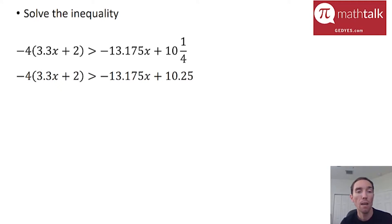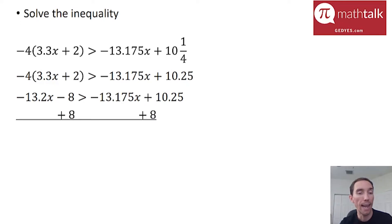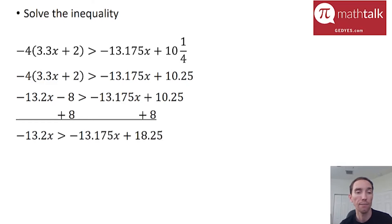Next, I'm going to distribute the negative 4 on the left-hand side into each term inside the parentheses. Negative 4 times 3.3 is negative 13.2, and negative 4 times 2 is negative 8. On the right-hand side, everything stays the same. Next, I want to move all my numbers to one side and all my x's to the other. I'll add 8 to both sides to keep things positive. The negative 8 goes away on the left, and on the right I get 18.25, while the x terms stay the same.